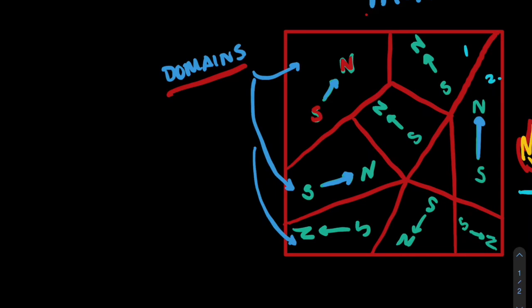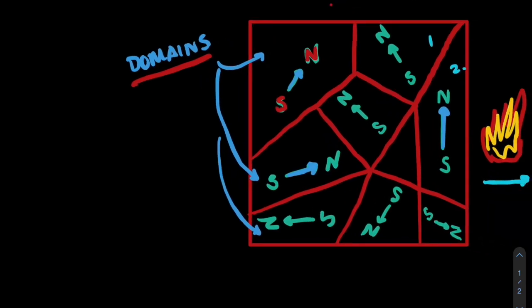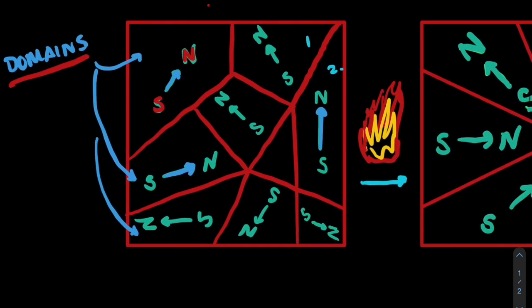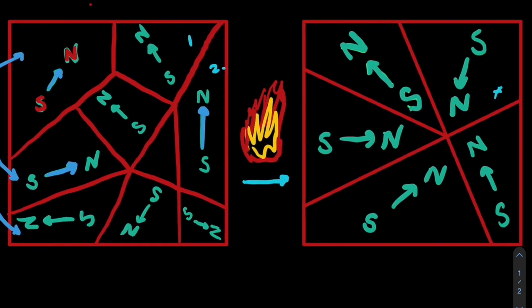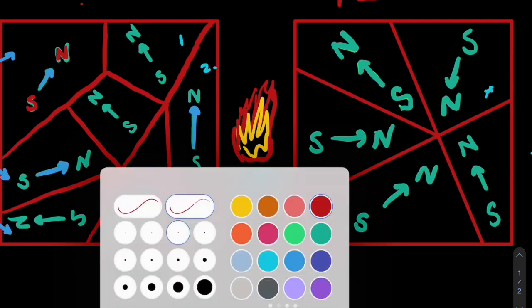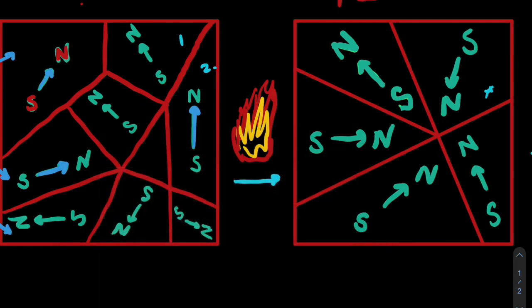But it does allow it to at least be attracted to other magnets. But as we begin to heat up this piece of iron, here I have my little flame and start to work the metal, if we do this in the presence of a magnetic field or current, so we maybe run a current through this piece of metal, sorry I'm going to change from red so that it's a little bit easier to see.